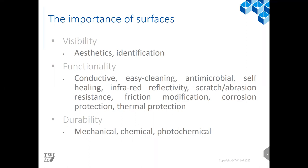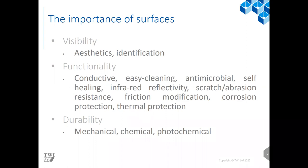Functionality is a key aspect of surfaces. Coatings are often put down onto engineered components to provide a degree of enhancement to functional performance — for example, infrared reflectivity, scratch or abrasion resistance, friction modification. Corrosion protection is one of the things we're most interested in, allowing components to have good mechanical properties without necessarily having inherent corrosion resistance.